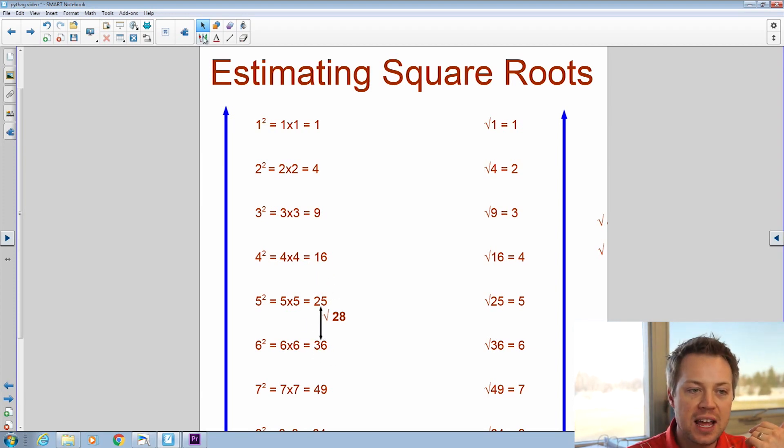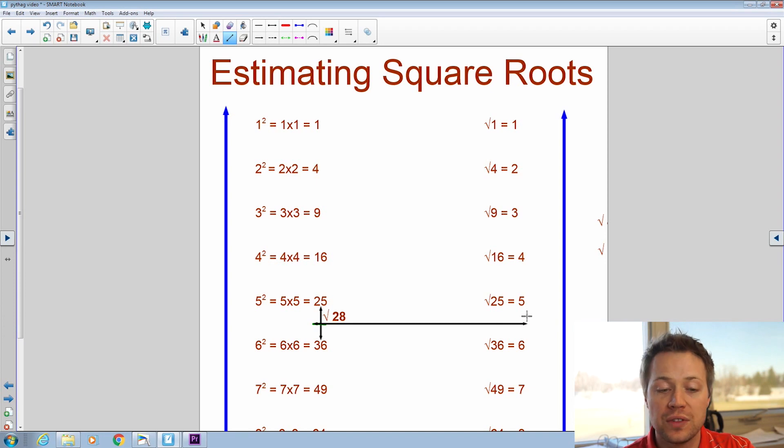Now let's just say that I had a number that fell exactly between 25 and 36 and I'll just use a straight line to show that. So if my number fell exactly between 25 and 36, you can see that the square root of that number would fall exactly between the square root of 25, which is five and the square root of 36, which is six. So if I had a number exactly between directly in the middle of 25 and 36, I know the square root would be 5.5.